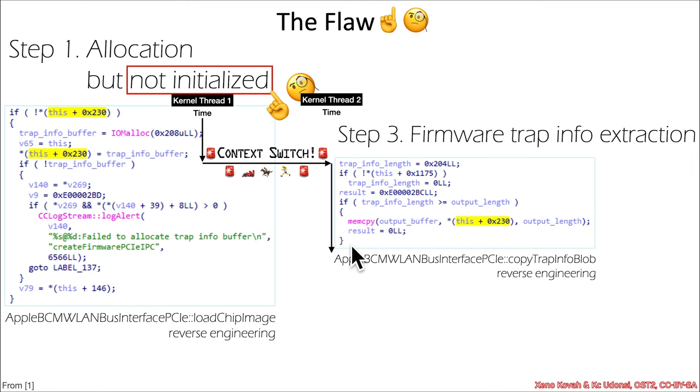And so if this code gets through here, we don't know what the output length is based on this little snippet. We just know that the output length is less than or equal to trap info length and trap info length is hex 204. So output length could be 204. This plus 230 comes from this io malloc over here.